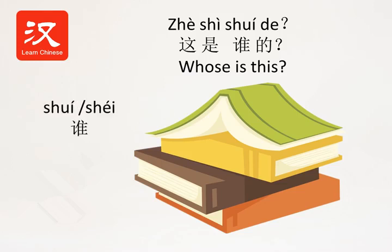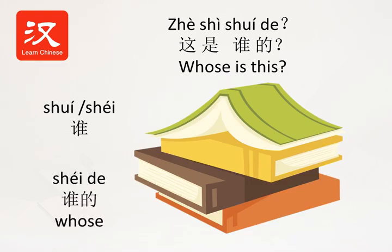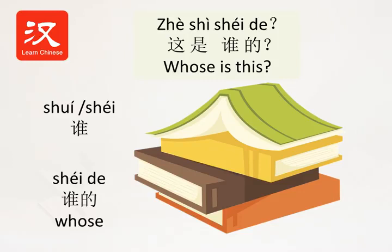谁 is second tone: 谁. But I also heard some Chinese people say 谁. Yes, in colloquial Chinese people prefer to say 谁, which seems easier to pronounce than 谁. And 谁的 means 'whose.' 这是谁的 — whose is this?